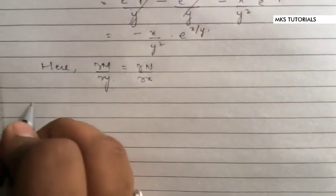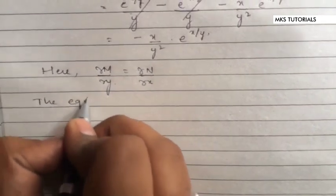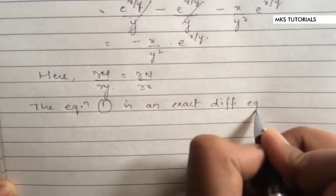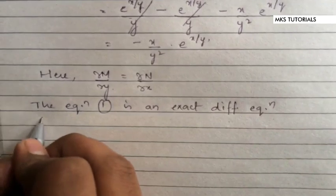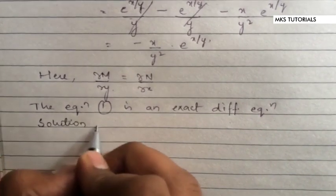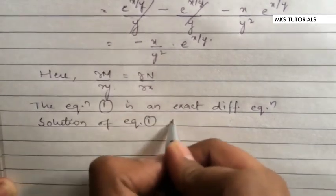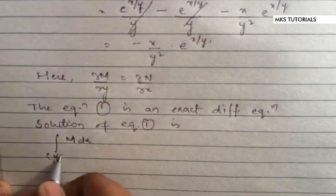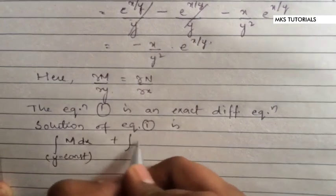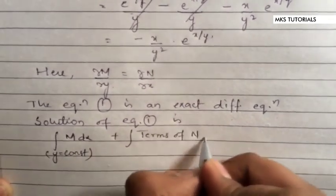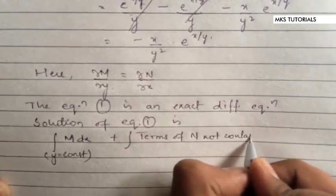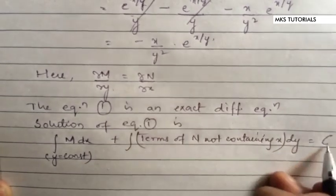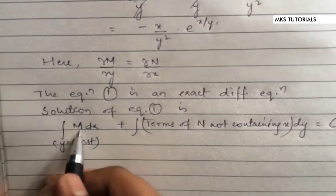Since ∂M/∂y equals ∂N/∂x, equation 1 is an exact differential equation. The solution is: integration of M dx (where y is treated as constant) plus integration of terms of N not containing x, with respect to y, equals C (constant of integration).